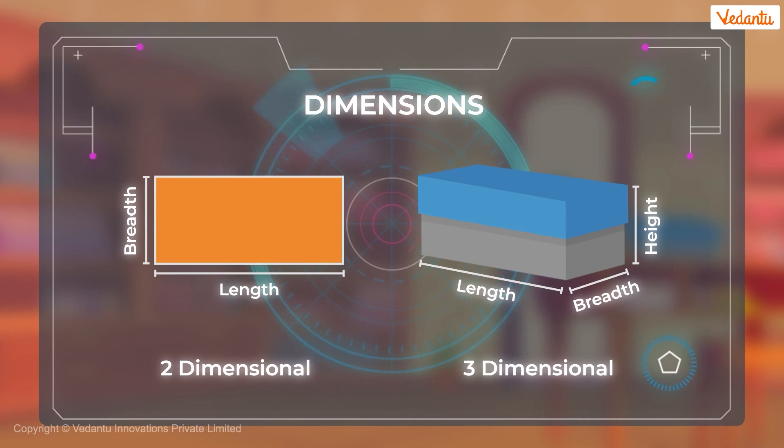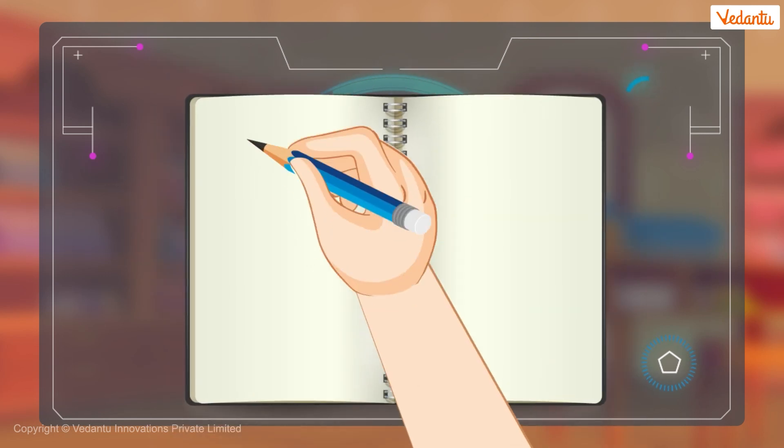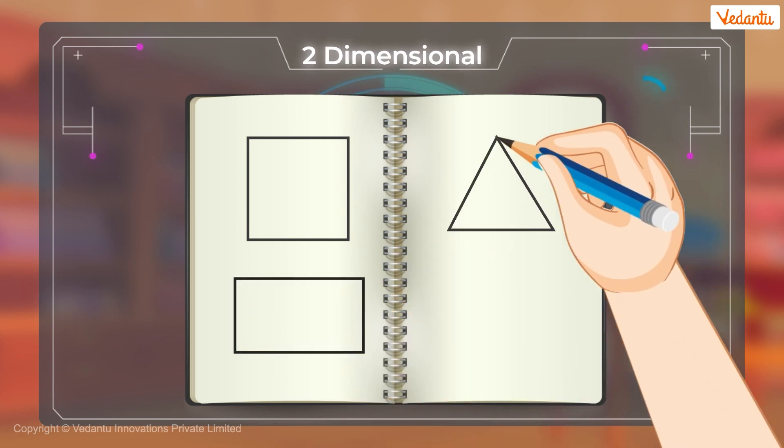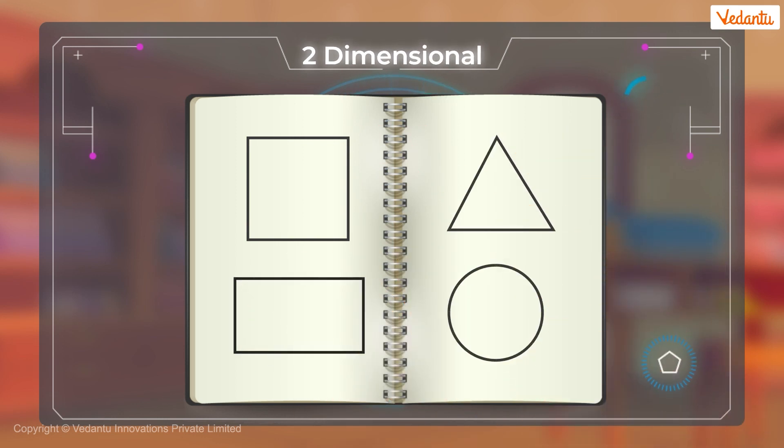Let's look at some more shapes. For example, anything that we can draw on our notebook is a two-dimensional shape. Like a square, a rectangle, a triangle or a circle.